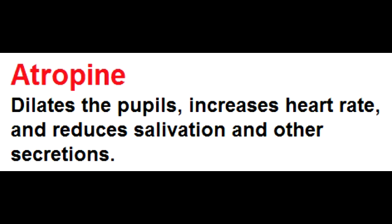The effect of atropine on the respiratory system is to reduce airway secretions. On the stomach, atropine decreases acid secretions. On the gut, atropine decreases motility.